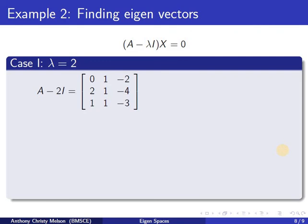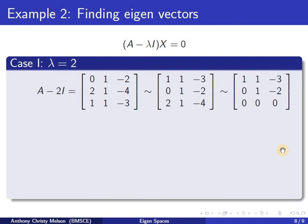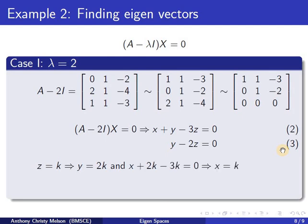To find eigenvectors, following the previous procedure, we have A minus 2I equal to the matrix given. Rearranging this, we get the echelon form. So (A minus 2I)x equal to 0 results in equations 2 and 3. Z is the free variable, and hence z equal to k implies y equal to 2k and x equal to k. So the set of all eigenvectors would be multiples of (1, 2, 1). Including the zero vector gives the Eigen space E at lambda equal to 2, which is the line passing through the origin and (1, 2, 1).